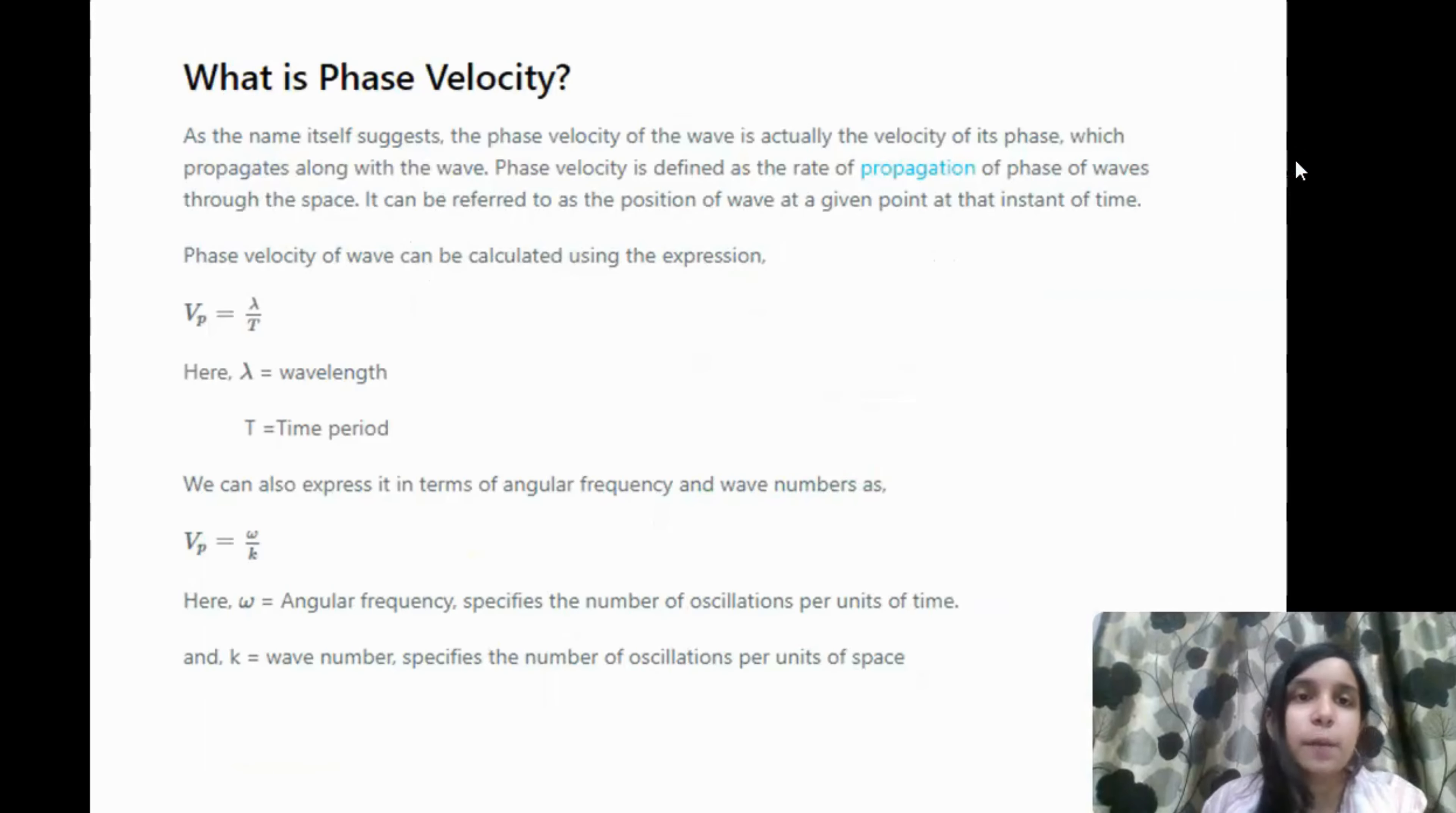Today we will study about the Phase Velocity. What is Phase Velocity? Simple, a wave that moves, its velocity, we call it Phase Velocity. Phase Velocity is the velocity of the actual velocity of its phase which propagates along with the wave. Phase Velocity is also defined as the rate of propagation of the phases of the waves through the space. How do we propagate the phases of its velocity and its rate, we simply call it Phase Velocity. It can also be referred to as the position of the wave at the given point at that instant of time.